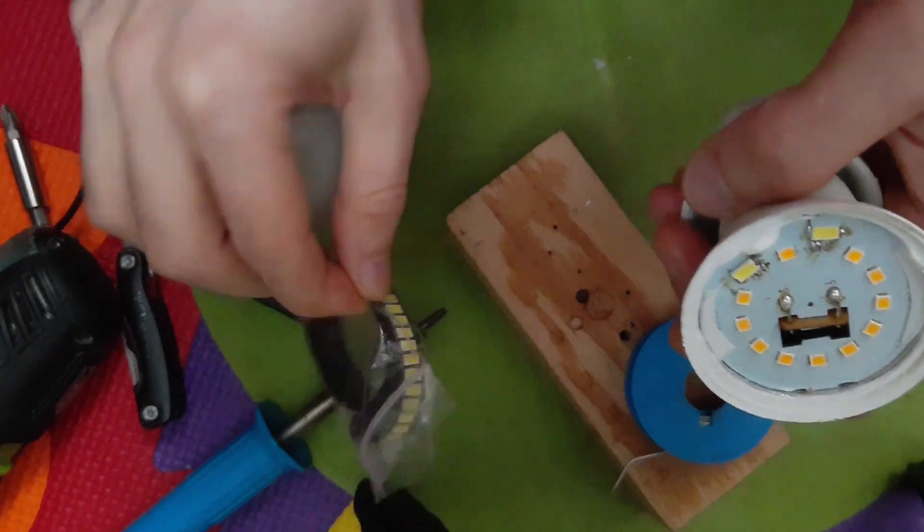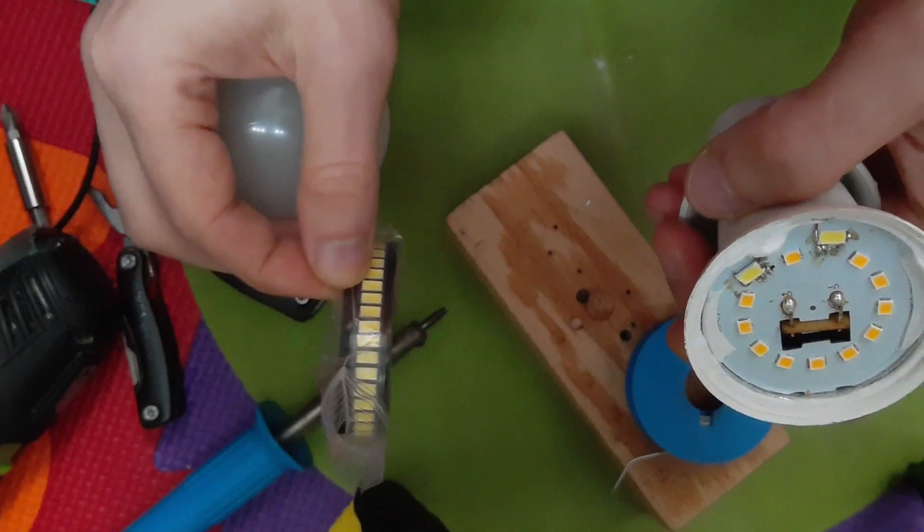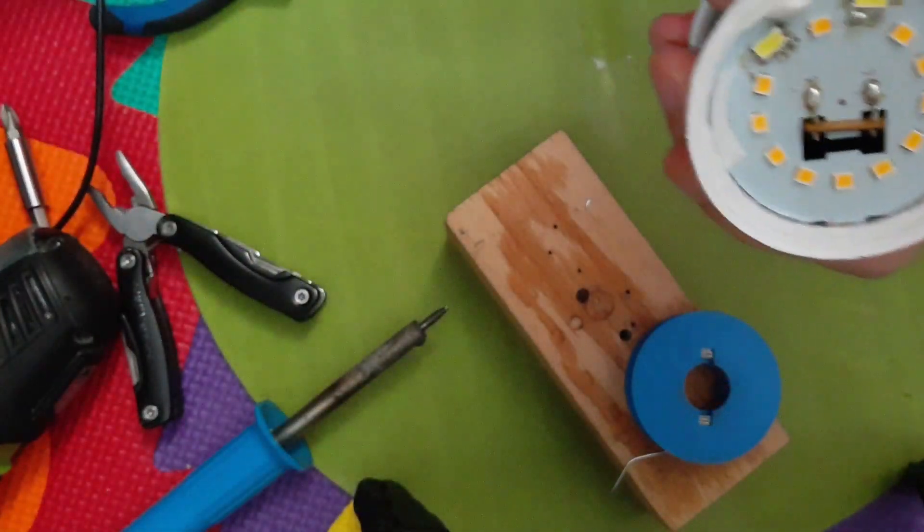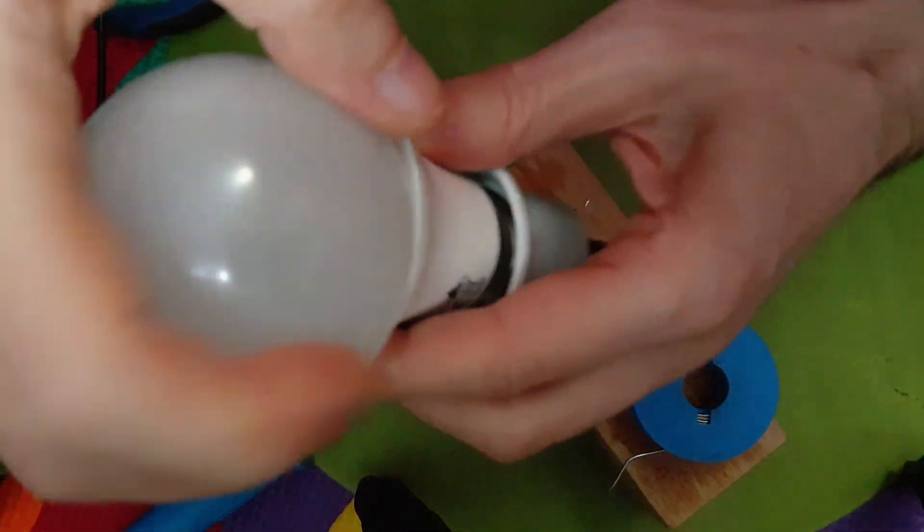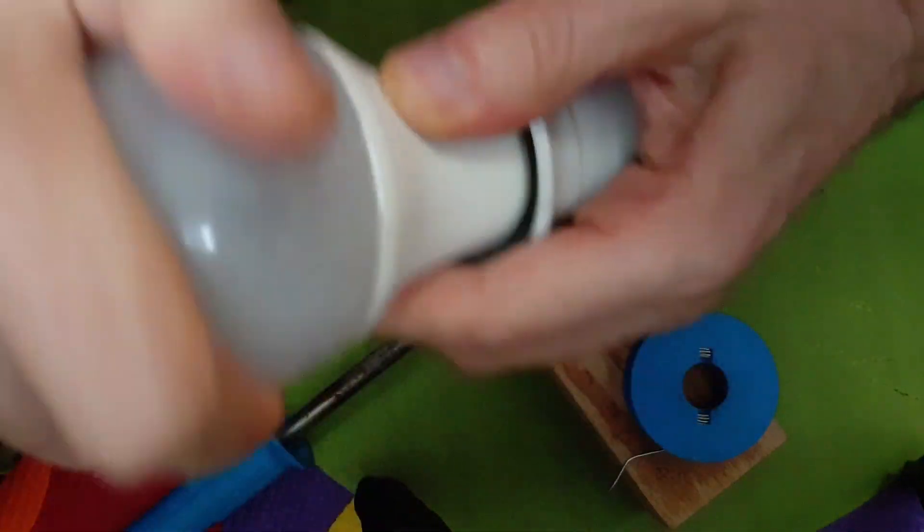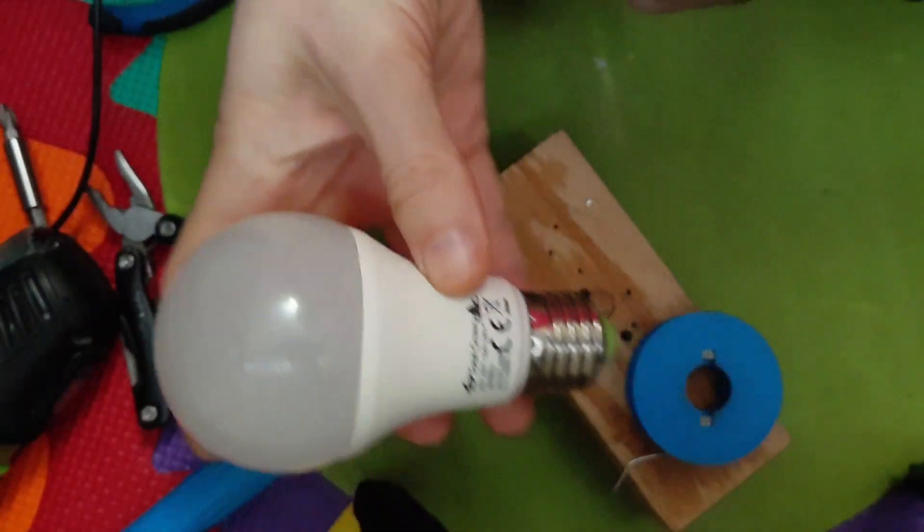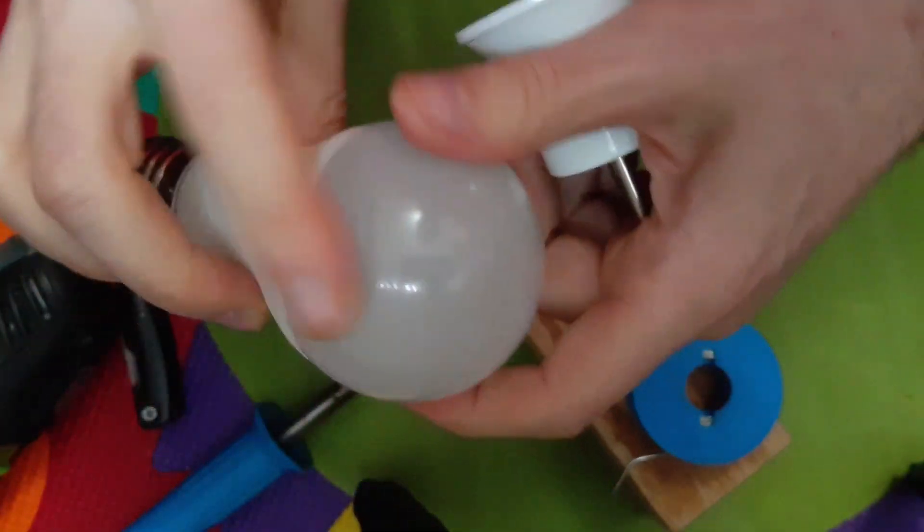You need some of these repair replacement LEDs. I think you can buy them, find them. Okay, so plug this back. You're just going to put it in your appliance. Hope it helps somebody.